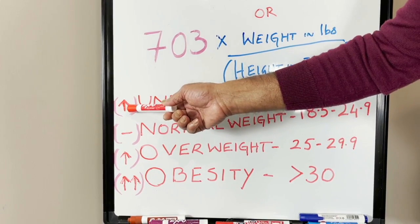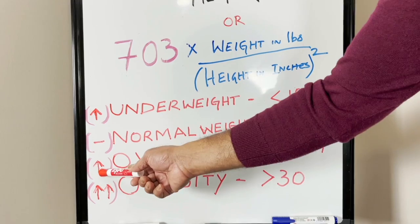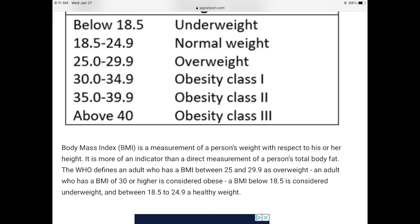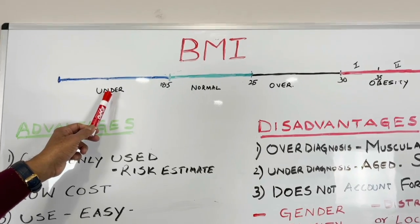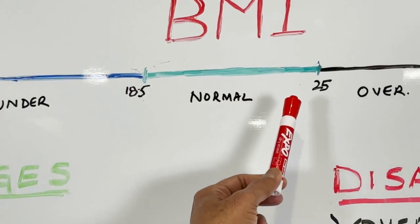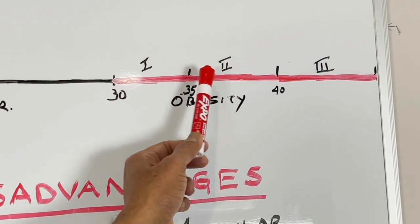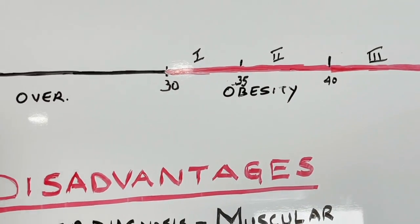All these categories carry risk factors for metabolic disease. Being underweight carries a higher risk for some diseases; normal weight carries the least risk; overweight carries mild to moderate risk; and obesity carries high risk. To make this very clear, these categories can be shown in a color pattern: underweight in blue, normal in green, overweight in black, and obesity — further classified into 30–35, 35–40, and above 40 — in red.